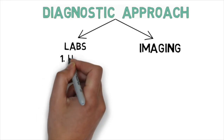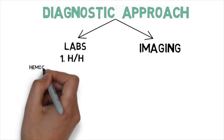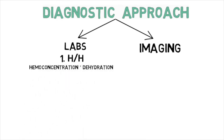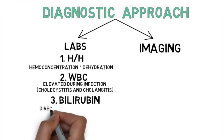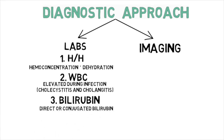For the diagnostic approach, starting with labs: first, look at hemoglobin and hematocrit — if significantly higher than baseline, this is indicative of hemoconcentration secondary to dehydration, requiring adequate hydration. Next, check the white count, which is usually elevated in acute cholecystitis and cholangitis due to infection. To detect obstruction at the level of the common bile duct, look at bilirubin — specifically direct (conjugated) bilirubin, which is elevated in biliary obstruction as seen with choledocholithiasis, cholangitis, and gallstone pancreatitis.